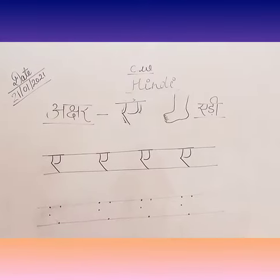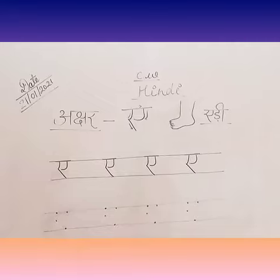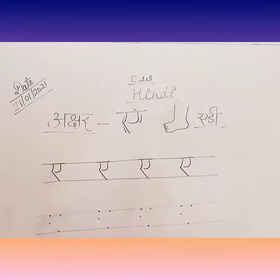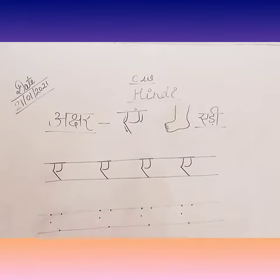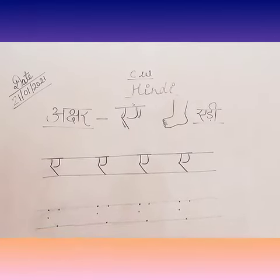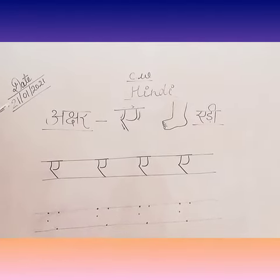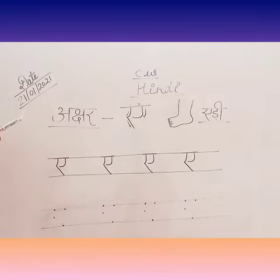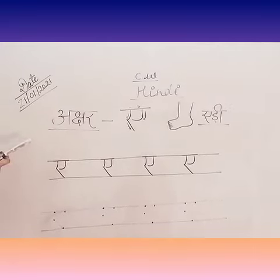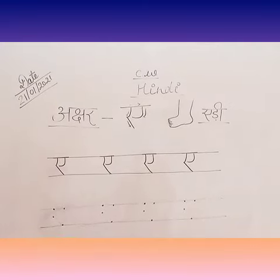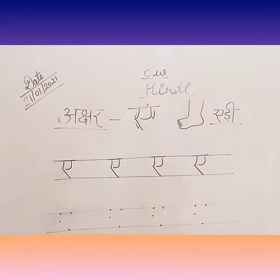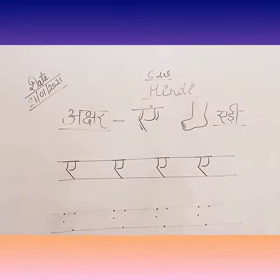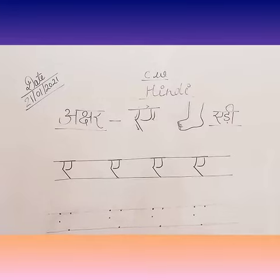Now it's time for our Hindi session. Kids, in Hindi today we will do letter A with four dots. Start with the date 21st month 2021, then you will write class, book, and write the heading Akshar A. So kids, now we will write the letter A with four dots.